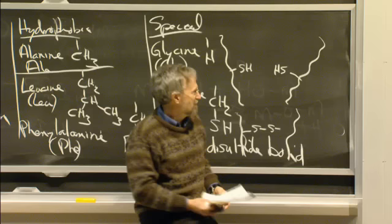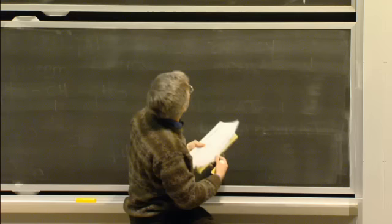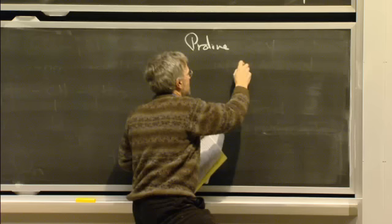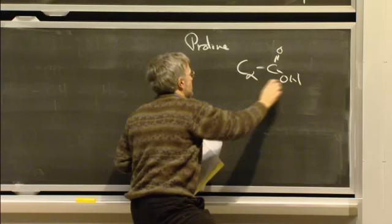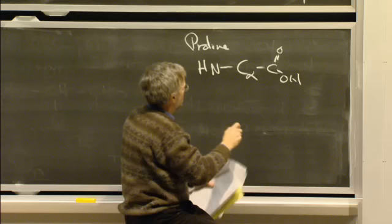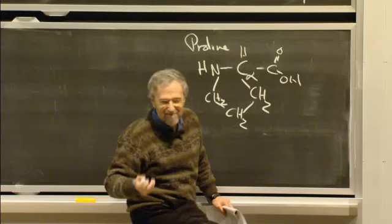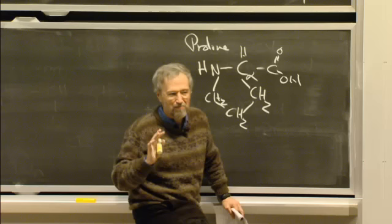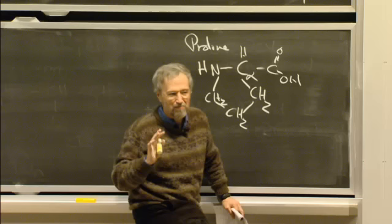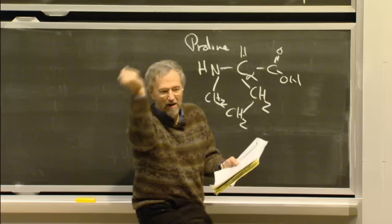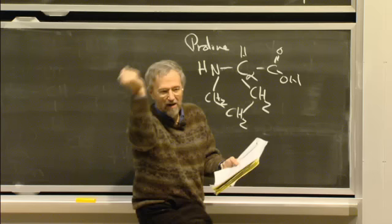There is one other special amino acid known as proline. It has the alpha-carbon atom with the carboxyl group and the amino group, but this carbon is linked by a little ring with three methylenes to that amino group. Because of this ring structure, this bond is not able to rotate. So wherever a proline shows up in a sequence, it puts structural constraints on the conformational space that the chain is capable of getting itself into.